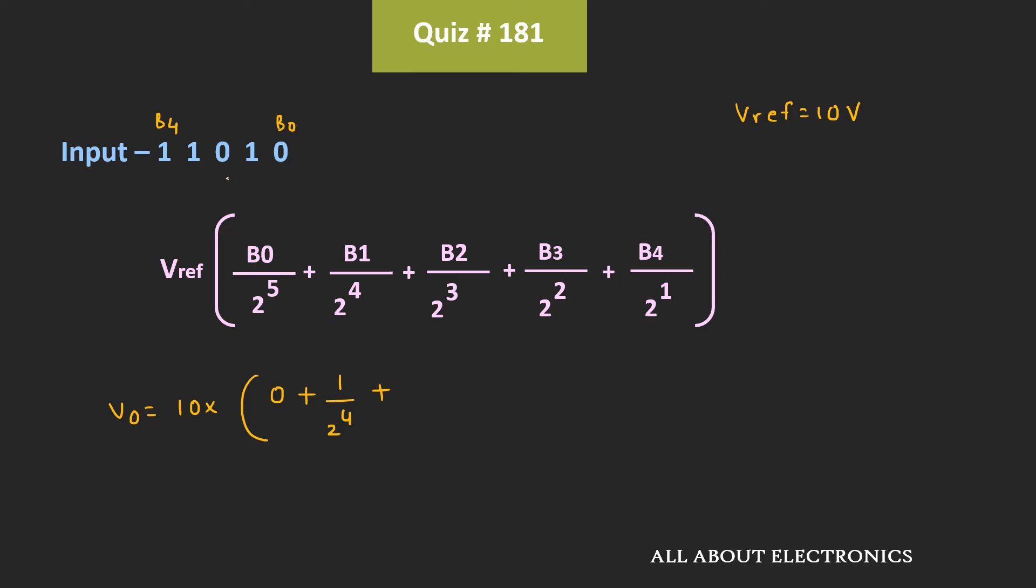Plus, if you see this B2, then B2 is equal to 0, while B3 and B4 are 1. That means the output voltage Vout will be equal to 1 divided by 2 to the power 2, plus 1 divided by 2 to the power 1.